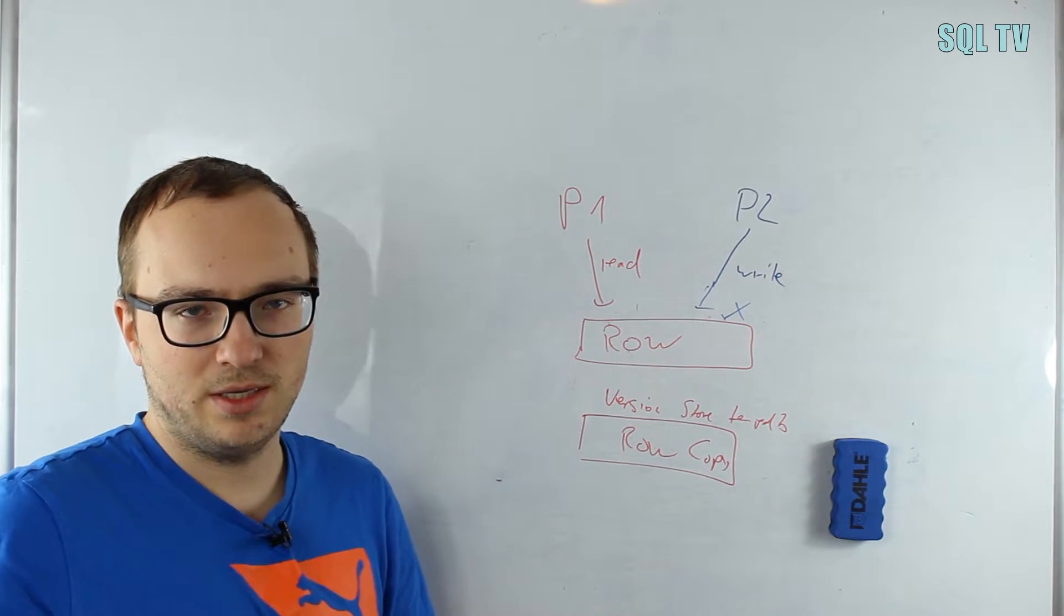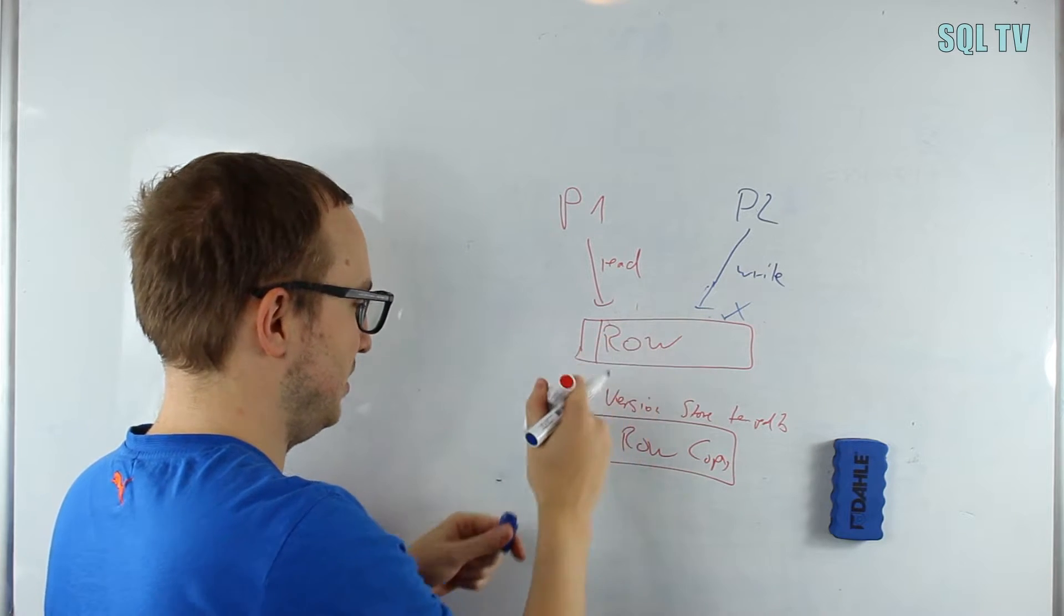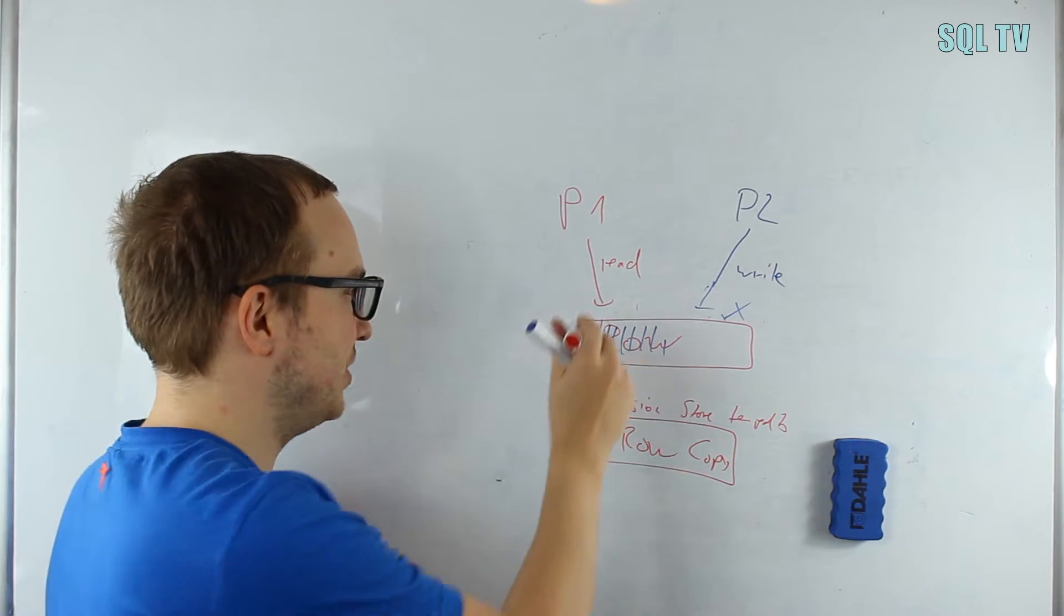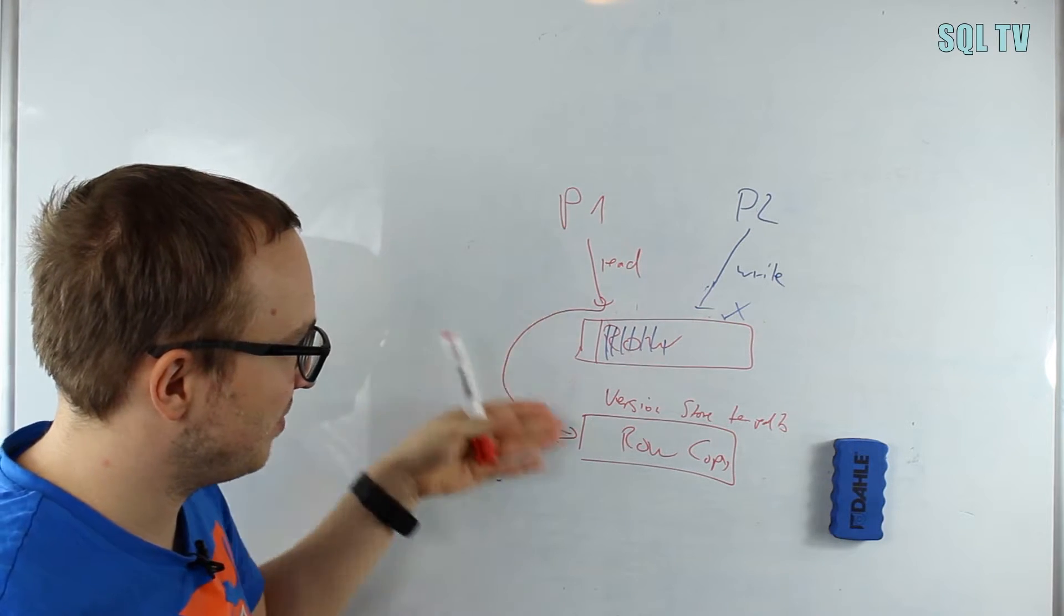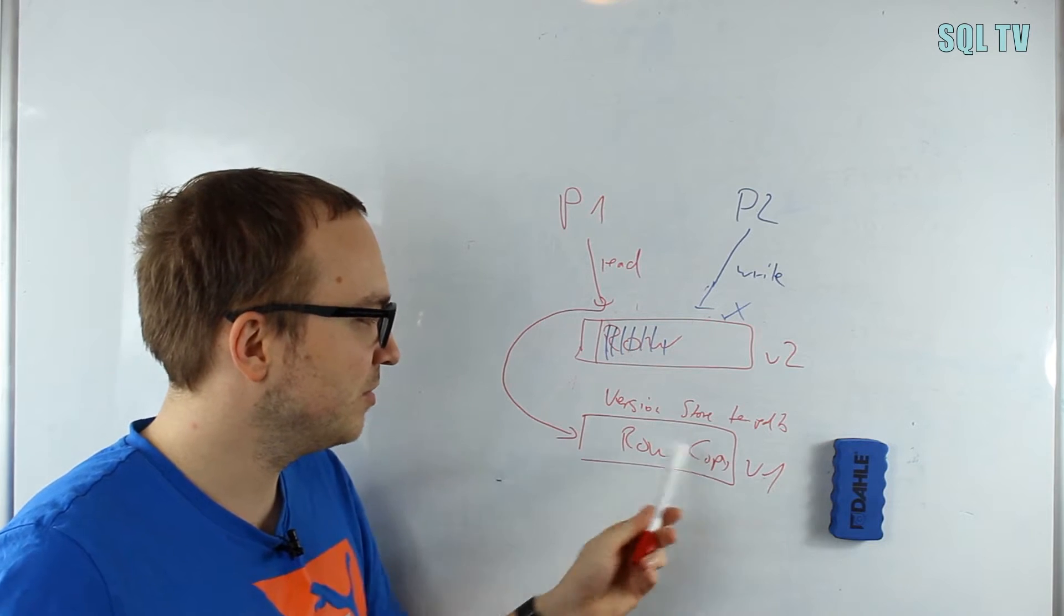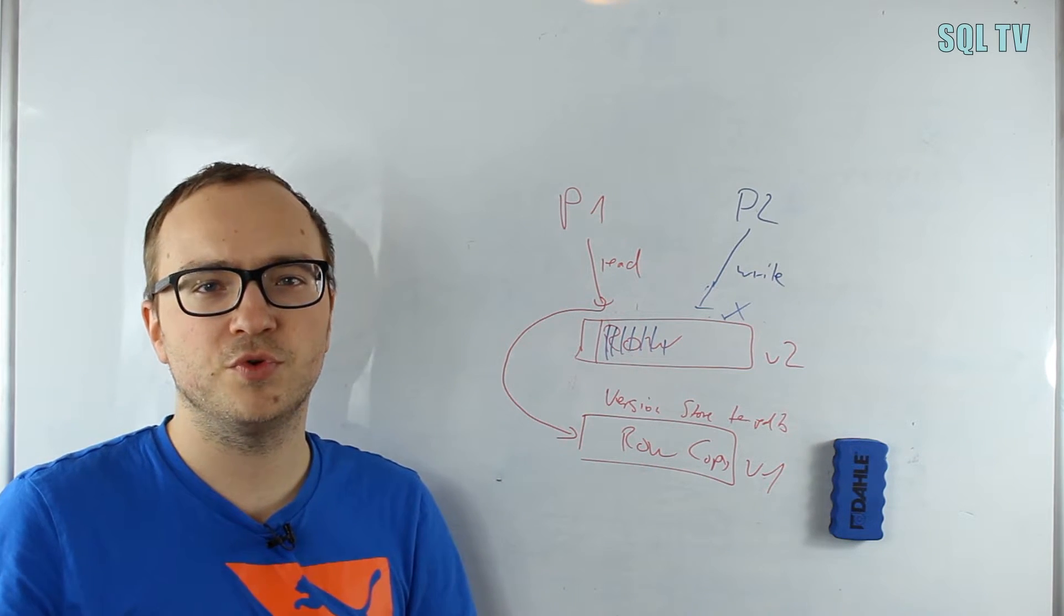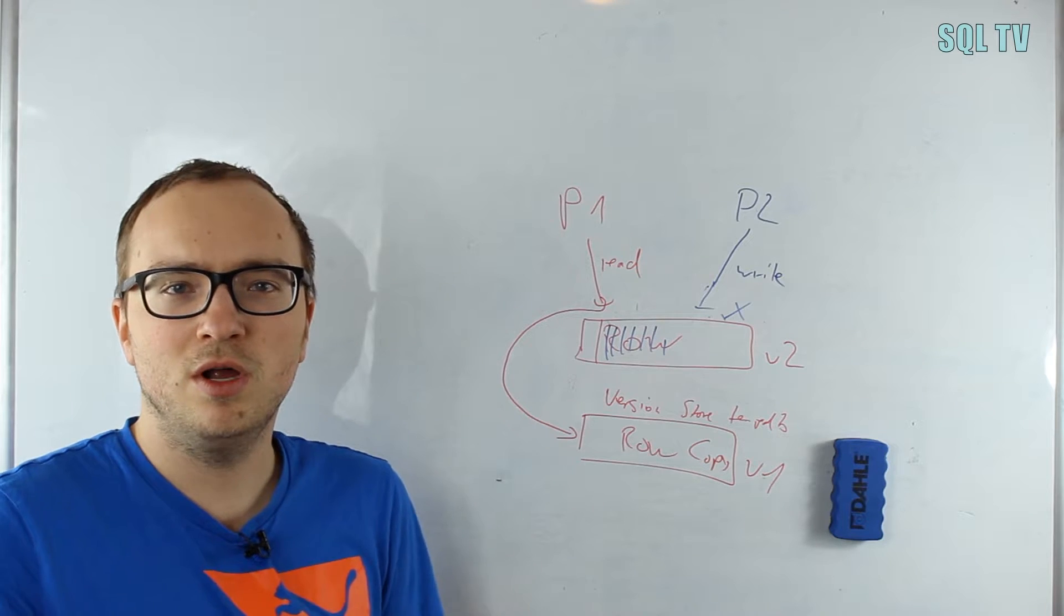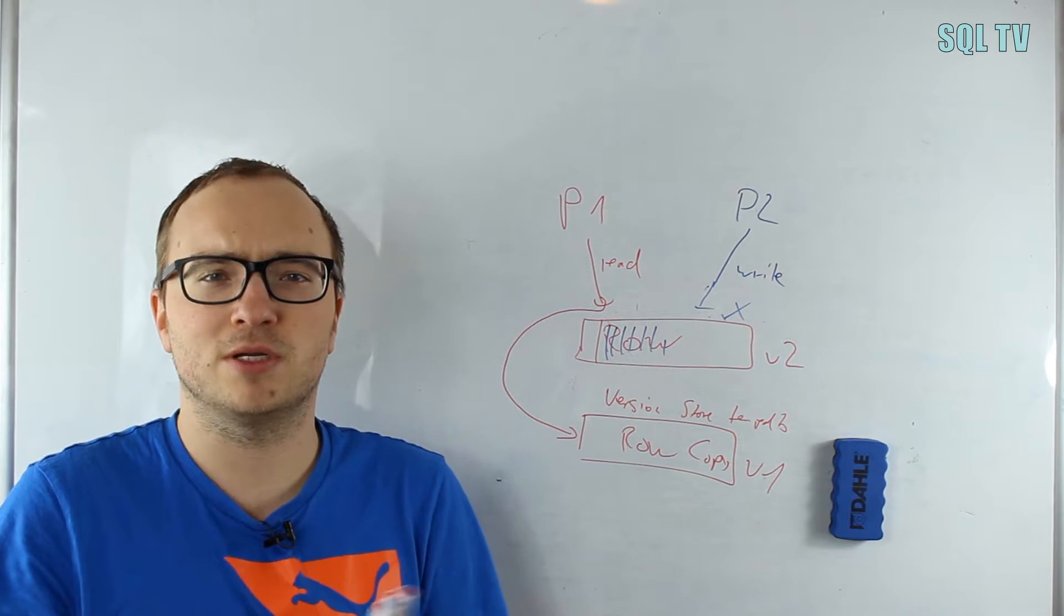What now P1 does is not reading from the original row since P2 already started writing here, so we can't really figure out what are the new columns, the old columns. So we just redirect our read to the version store, which happens automatically in SQL Server. Process one reads from the old version, like version one, and this is version two being built from process two right now. So we are reading version one since this was the last stable version, and while this happens P2 can just modify the row to a newer version. Now readers are not blocked by writers, but still writers are blocked by each other because there is no possible way that I can write the same row with different contents.